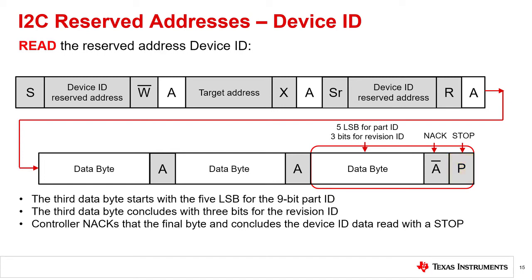The five MSBs of this byte are the five LSBs for the part identification. The three LSBs of this byte are the three bits used for die revision. The controller nacks the last byte and concludes the device ID read with a stop. The reading of the device ID can be stopped at any time by sending a nack. If the controller continues to acknowledge the bytes after the third byte, the target rolls back to the first byte and keeps sending the device ID sequence until a nack has been detected.